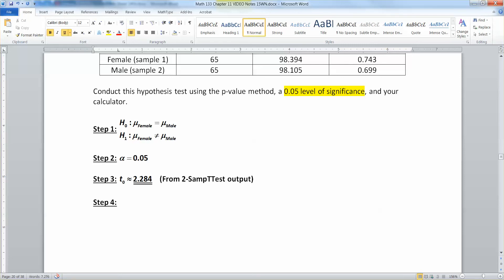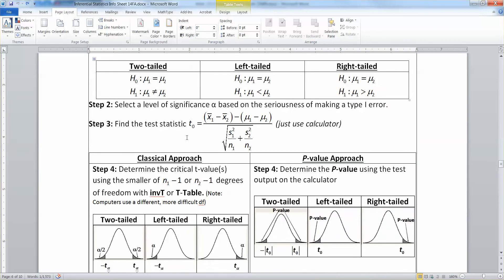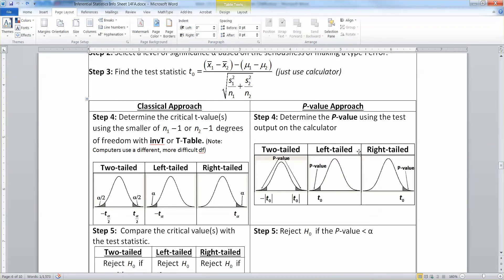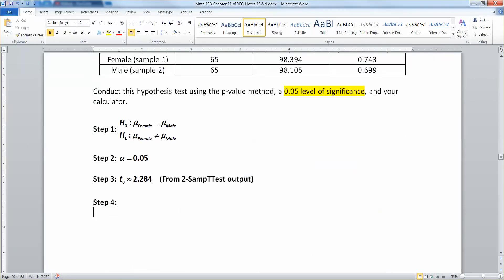I said it's from the 2-SAMP-T test output. That's all we need to do. We're not going to do everything else. There's only two tests I'll let you get away with that, and this is one of them, because it's just so tedious. Then step four - now we're going to have to draw a picture. So we're going to have to draw a T-sample test picture, which is very similar to what you had before. Now you're doing a p-value approach, so you're going to use this two-tailed one right here. So let me draw that. I'll be right back.